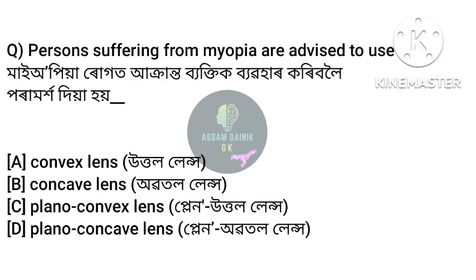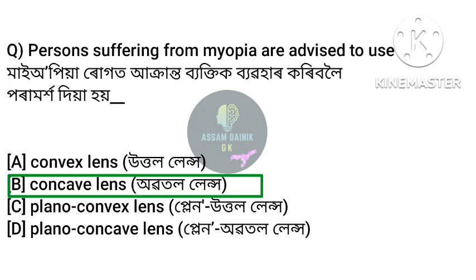Next question: persons suffering from myopia are advised to use which type of lens? Myopia patients are advised to use a specific type of lens. Answer: Option B, concave lens. Myopia patients are advised to use a concave lens.